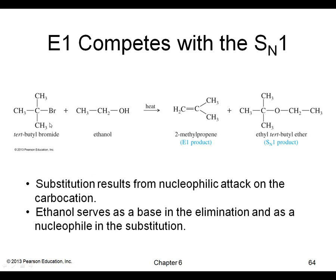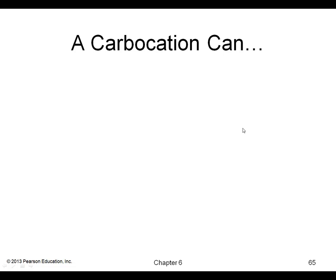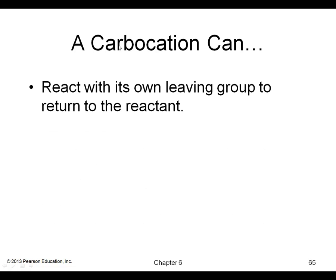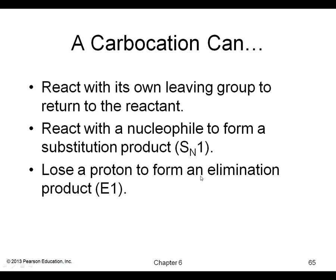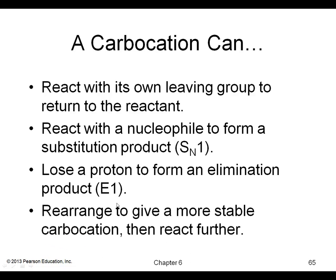The E1 can compete with the SN1, so again you end up getting a mixture of products. The carbocation can react with its own leaving group to return to reactant, or it can react with a nucleophile to give a substitution product, or it can lose a proton to form an elimination product, or it can rearrange to give a more stable carbocation and then react further. This is a nice summary of E1 versus SN1 in terms of the different things that can happen.